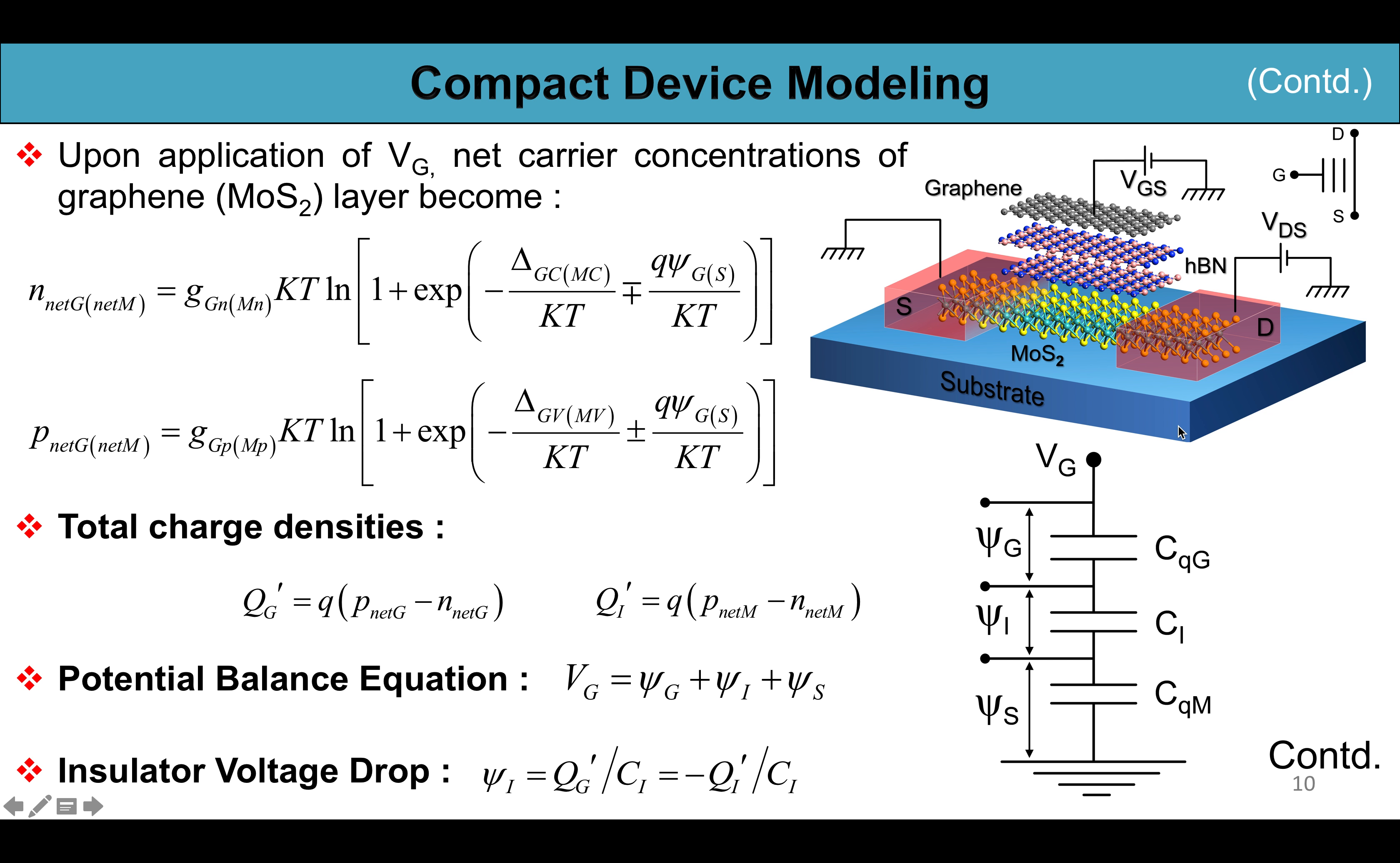Now the equivalent electrostatic circuit of this structure becomes as shown in the slide. This model consists of three capacitors in series: CQG the quantum capacitance of graphene, CI the insulator capacitance of hBN, and CQM the quantum capacitance of MoS2.